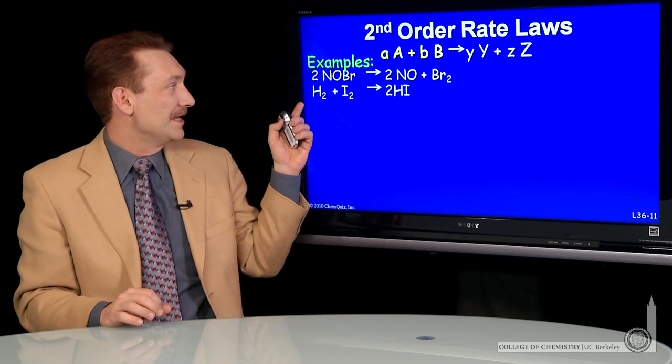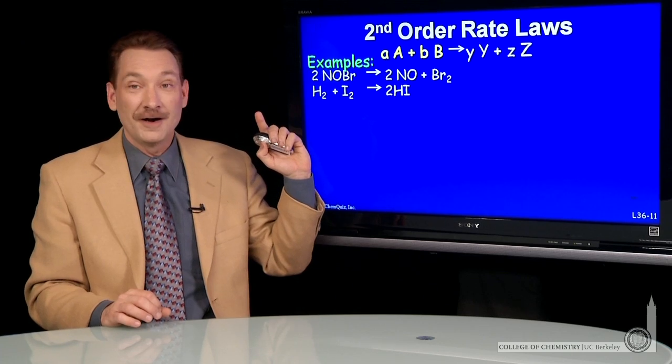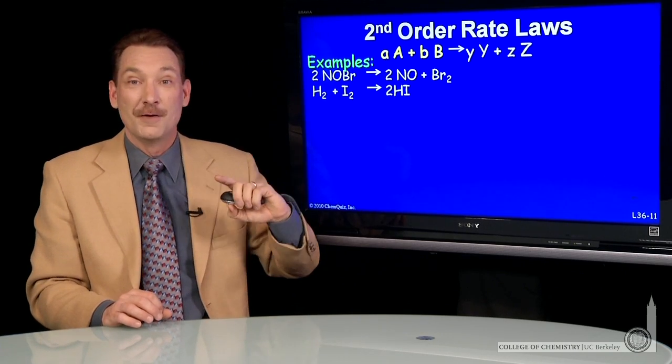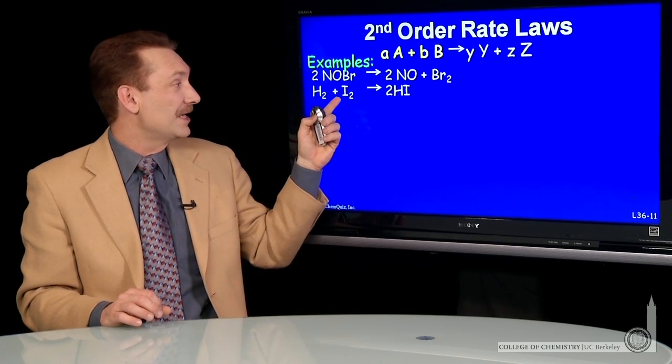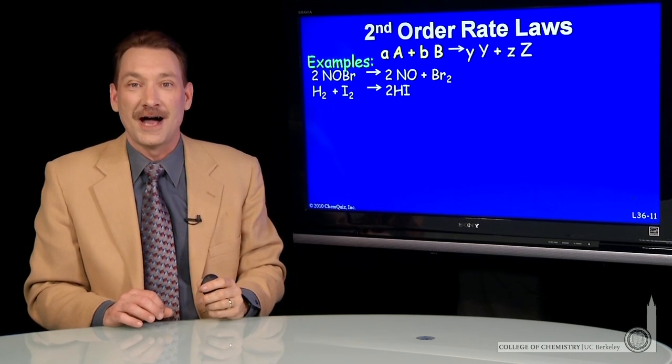So here are some examples. The NOBr breaking down into NO and bromine, and hydrogen and iodine making hydrogen iodide.